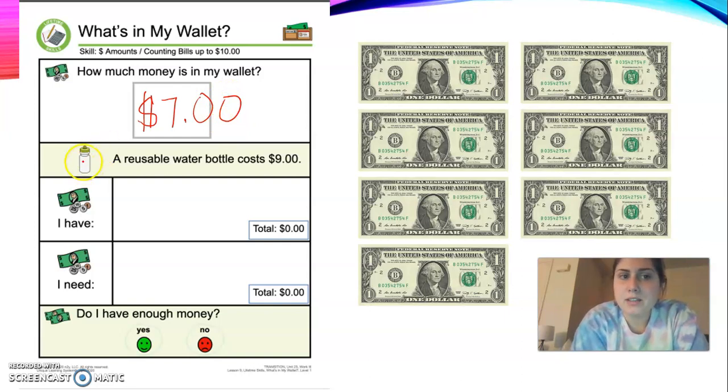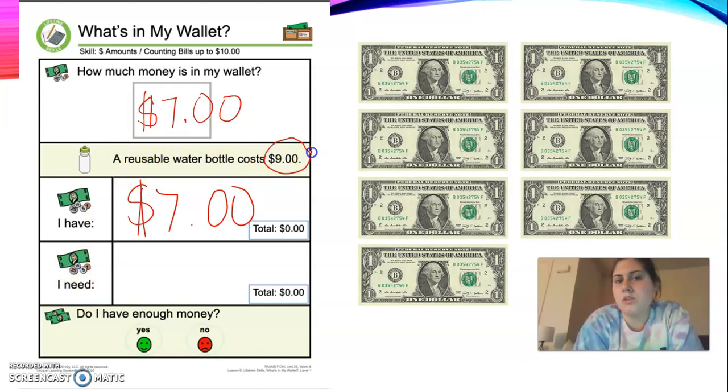Next I'm going to read you this. A reusable water bottle costs nine dollars. So you're going to need to again write how much money you have. Don't get confused. We have seven dollars. That goes in this box. I need, hmm, well our reusable water bottle costs nine dollars. So I'm going to circle that because that's how much money I need is nine dollars.